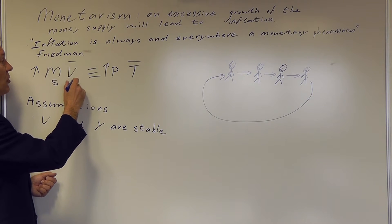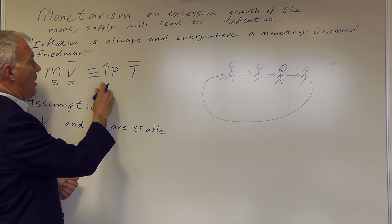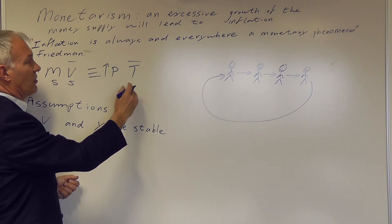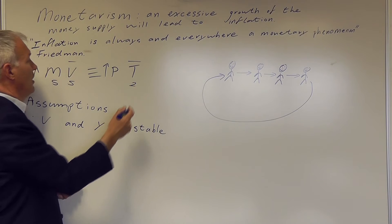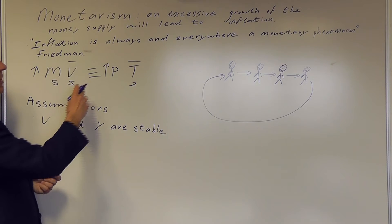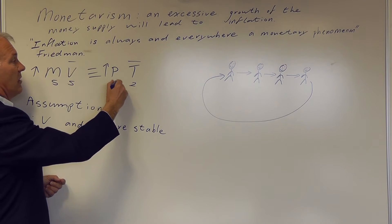The velocity of circulation is, say, 5. And say the level of transactions is 2. Then, obviously, the price level is going to be calculated accordingly.